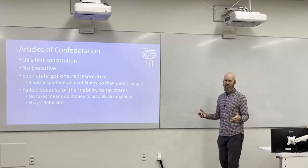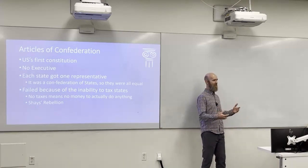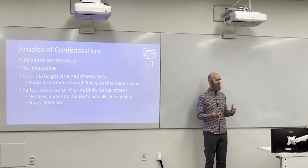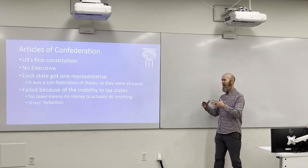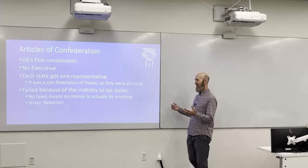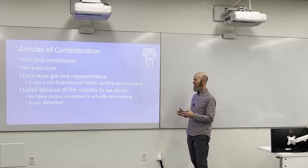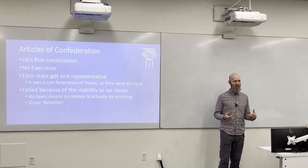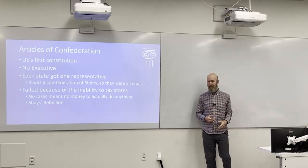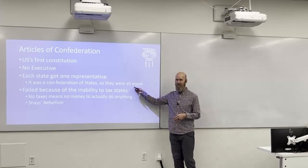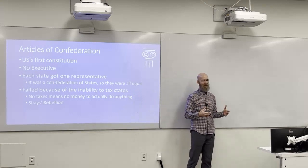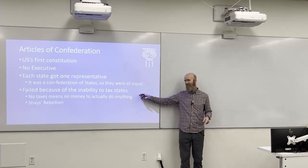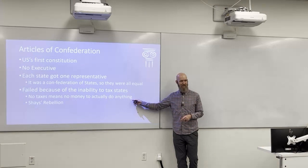If you were the state of Georgia — basically your own country — thinking about partnering with other states for common defense, you wouldn't want to give up much power to the federation. So they formed a weak system with no executive, no courts, just a Congress. Small states like Rhode Island wanted equal treatment, so every state got an equal vote in Congress regardless of size. One major problem: the Articles of Confederation did not give Congress the ability to tax the states.